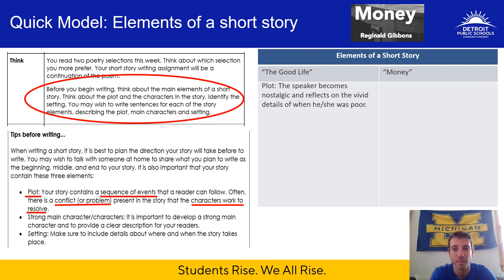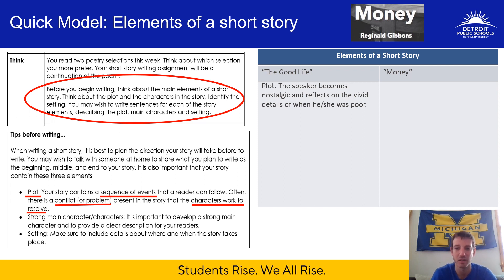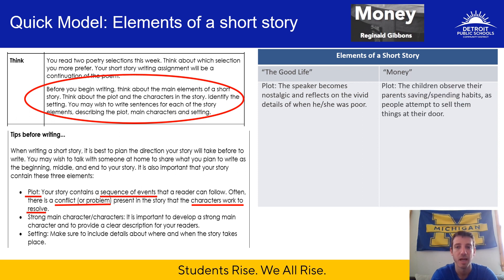In The Good Life, the plot: the speaker becomes nostalgic and reflects on the vivid details of when he or she was poor. Really it was about the speaker being nostalgic about the time when they had little money versus more money — they felt that having little money made them the unique individual they are today, unlike when they had more money and were like everyone else. For Money, the plot: the children observe their parents' saving and spending habits as people attempt to sell them things at their door.